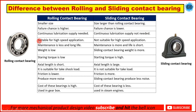The rolling contact bearing is suitable for high-speed applications, whereas the sliding contact bearing is not suitable for high-speed applications. In the rolling contact bearing, maintenance is less and it has a long life, while the sliding contact bearing requires more maintenance and has a shorter life.